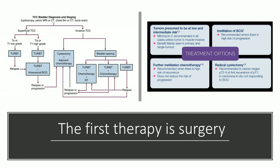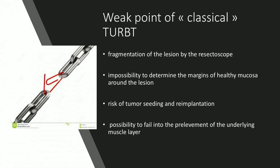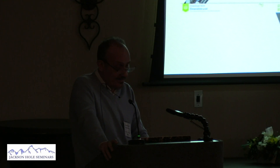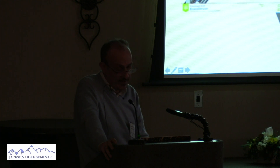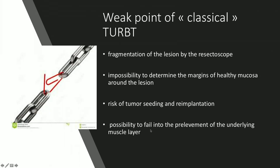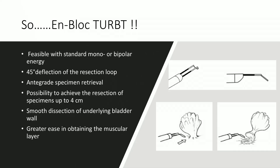TUR-BT is the most important tool in treatment. But the classic TUR-BT still has some fragile points: to resect the tumor, you need to fragment it. You do not have the possibility to determine the margin of the healthy mucosa around the lesion. There is also a risk of tumor seeding. And achievement of the muscular layer is not present in a high percentage with this technique.